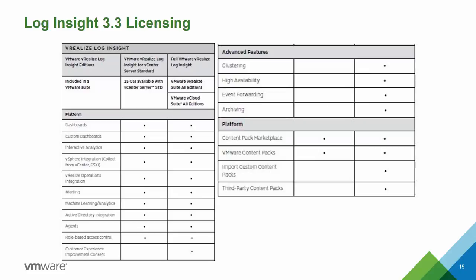In regards to licensing, Log Insight's licensing is pretty straightforward. There are two versions available. The first is Log Insight for vCenter Standard, which comes free with vCenter — 25 OSI licenses included. The second is the full vRealize Log Insight, which comes in all editions of the vRealize suite and all editions of the vCloud suite. The full version allows for clustering, high availability, event forwarding, archiving, and the ability to import custom and third-party content packs.